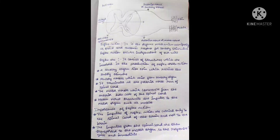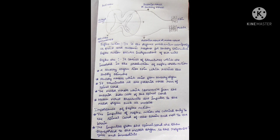The sensory nerve terminates at the posterior nerve root of the spinal cord. The motor nerve arises from the anterior horn cell of the spinal cord and transmits the impulses to the motor organs such as muscle.